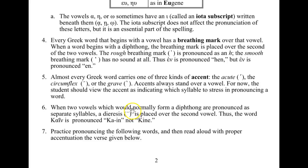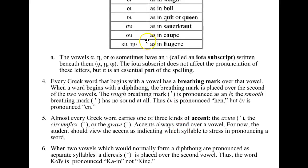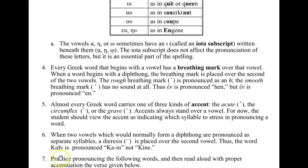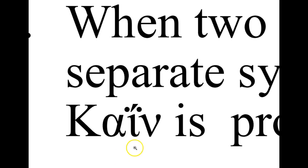When two vowels that would normally form a diphthong are pronounced as separate syllables, two dots called a diaresis are placed over the second vowel. This is similar to the German umlaut. Thus, the word that looks like 'kine' is pronounced ka-een and not kine, because the two dots are over the iota, telling us to pronounce the alpha separately from the iota.